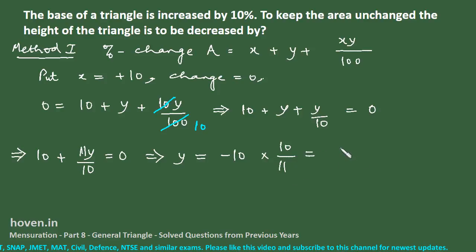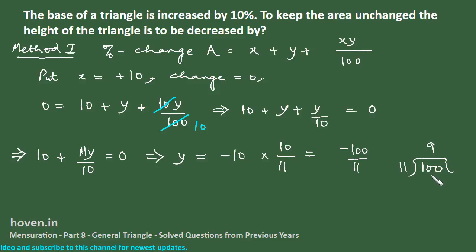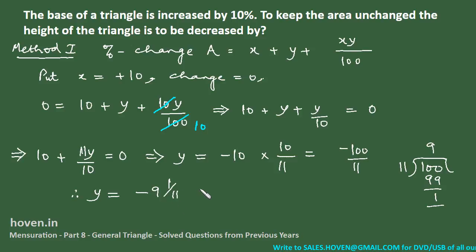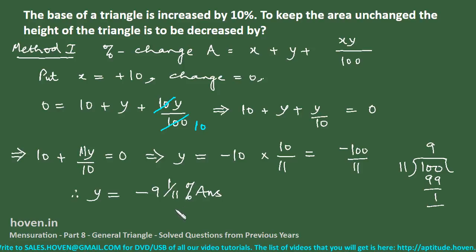This gives y = -100/11, which equals -9 and 1/11. The minus sign means there must be a decrease. So the height must be decreased by 9 1/11 percent.